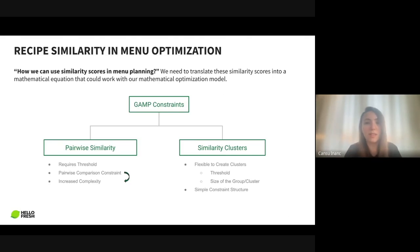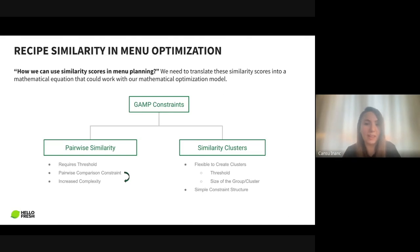The first approach: we have some thresholds to define whether recipes are really similar or not. When we remove dissimilar recipes, we have some pairs on hand and can create constraints based on that — saying if recipe A and B are really similar, we don't want both in our menu. However, if we have lots of similar recipes in the recipe pool, we need to create lots of constraints, which increases mathematical formulation complexity in mixed integer programming.